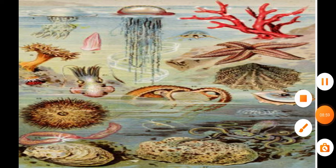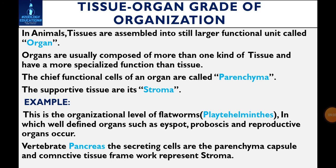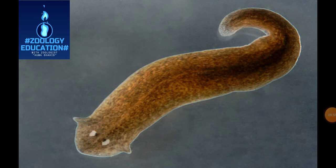Moving on to the tissue-organ grade of organization. In animals, tissues are assembled into still larger functional units called organs. Organs are usually composed of more than one kind of tissue and have a more specialized function than tissue alone. The chief functional cells of an organ are called parenchyma; the supportive tissue is called stroma. This is the organizational level of flatworms — Platyhelminthes — in which well-defined organs such as eyespots, proboscis, and reproductive organs occur. In the vertebrate pancreas, the secreting cells are the parenchyma, while the capsule and connective tissue framework represent the stroma.